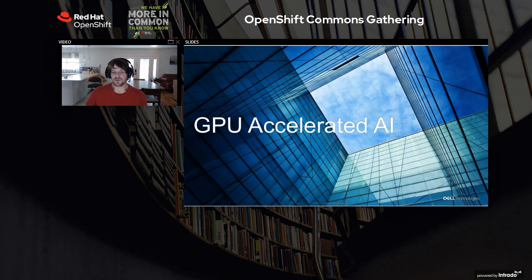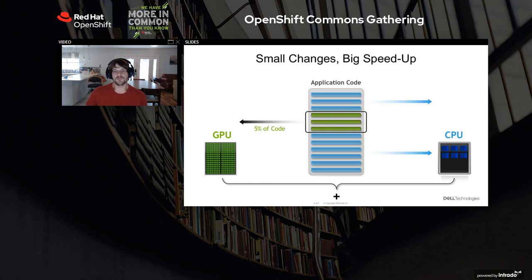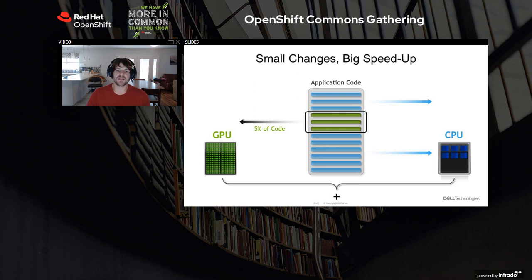Talking about GPUs accelerating AI: even inside of the AI application, a small amount of code — such as the convolutions in a convolutional neural network — benefits from being highly parallelized, and they often represent a very small amount of the code. But by moving them to the GPU, you can see 10 to 15 times speedups versus running the same part of the application on the CPU. This is why it's useful to have a GPU-accelerated OpenShift environment.